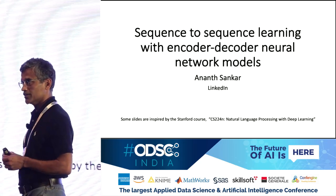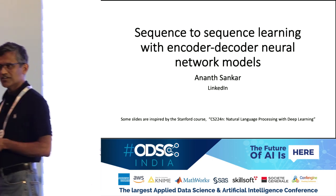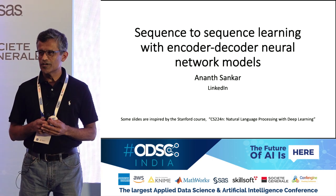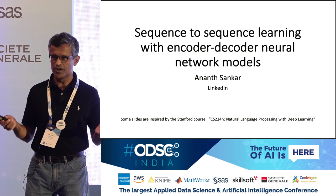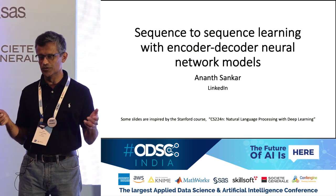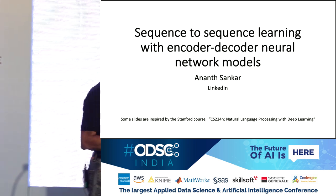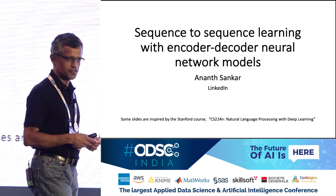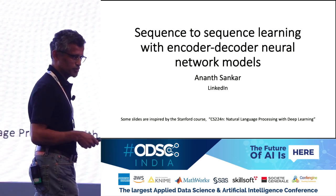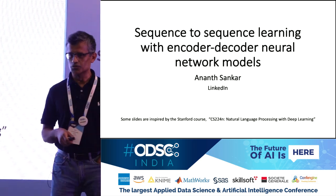At that time, it didn't work very well. We got some interesting results, but it didn't beat the Gaussian mixture model system because the neural network wasn't very powerful, didn't have many layers, didn't have many nodes, and we didn't have the compute power to train on tens of thousands of utterances of speech. So it was a cool idea, but it really didn't work.